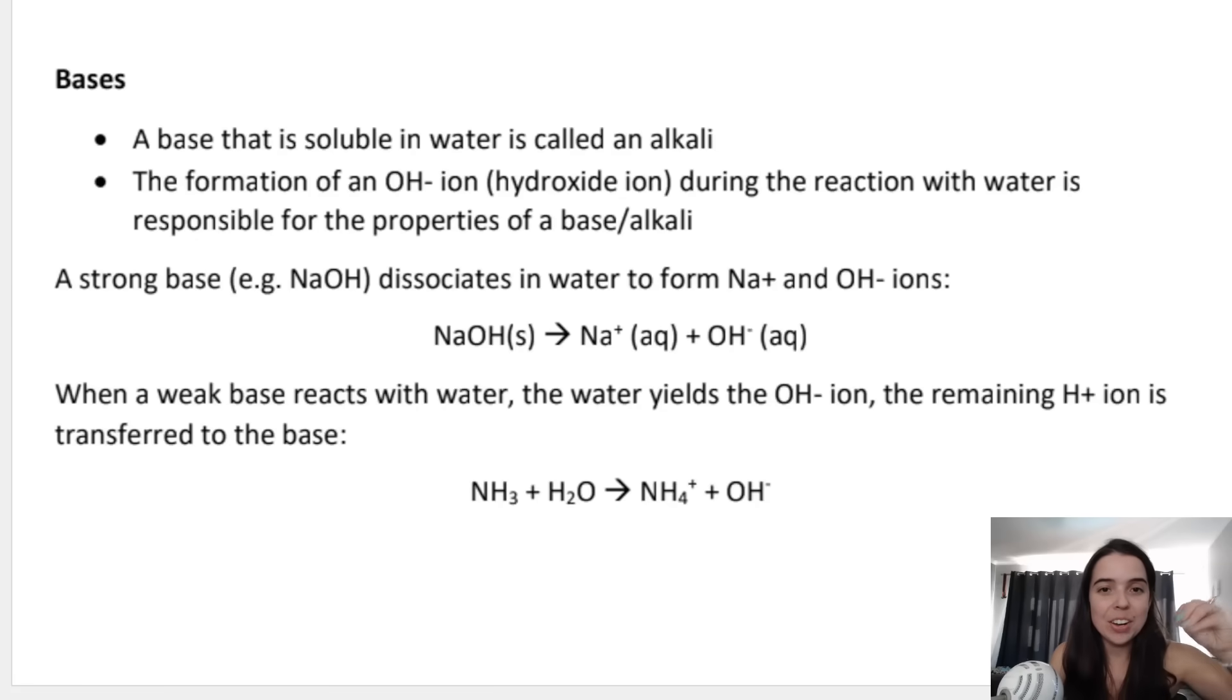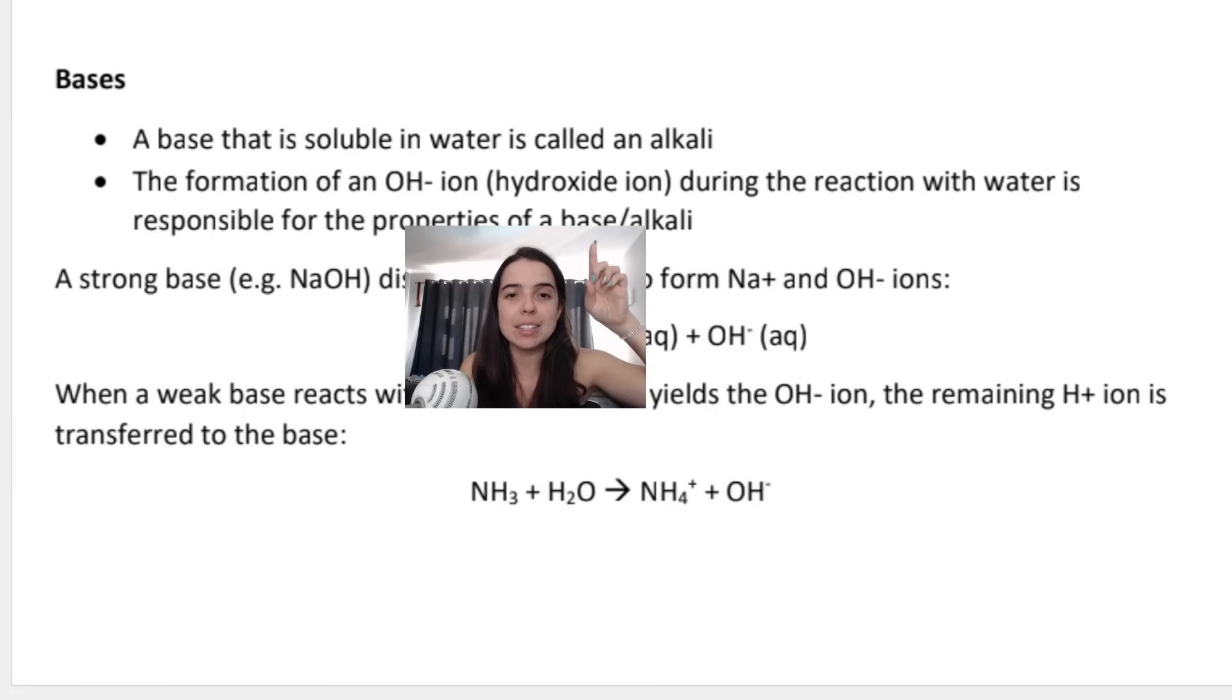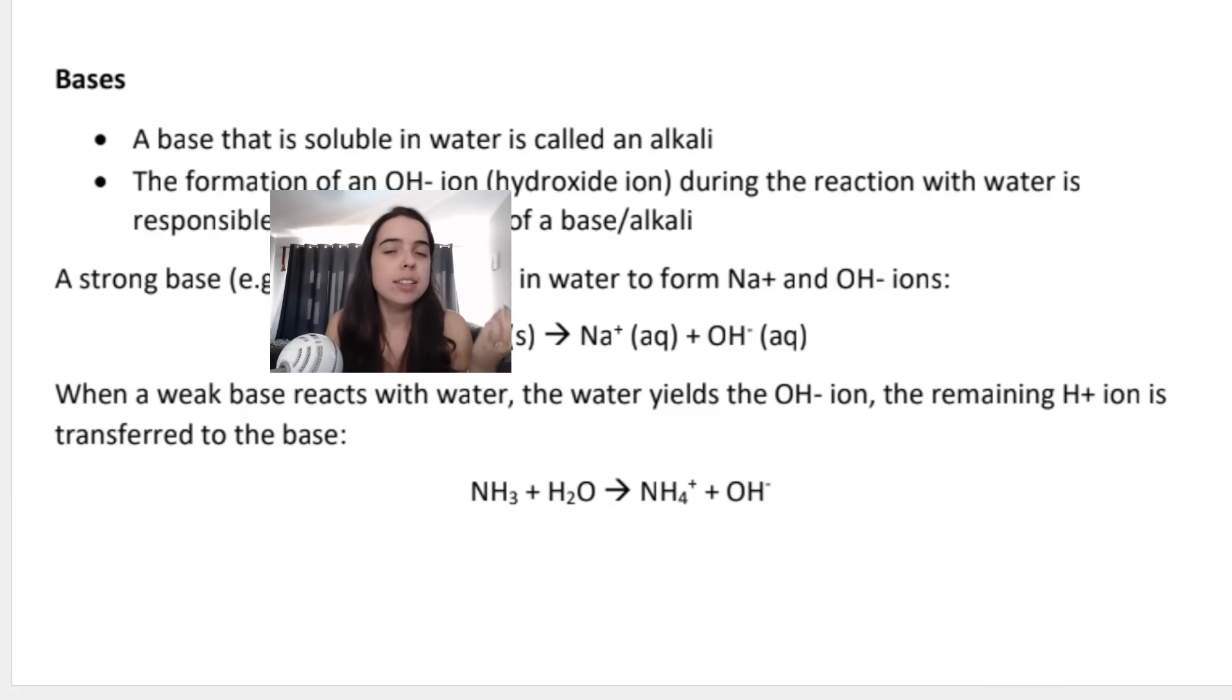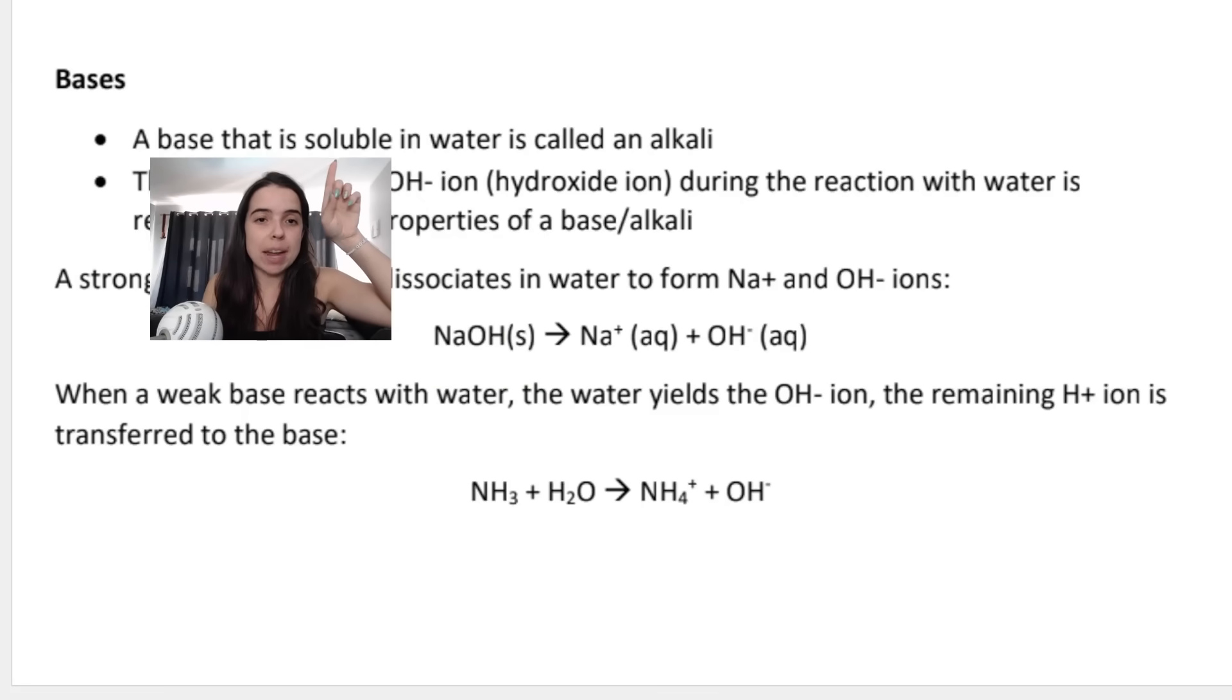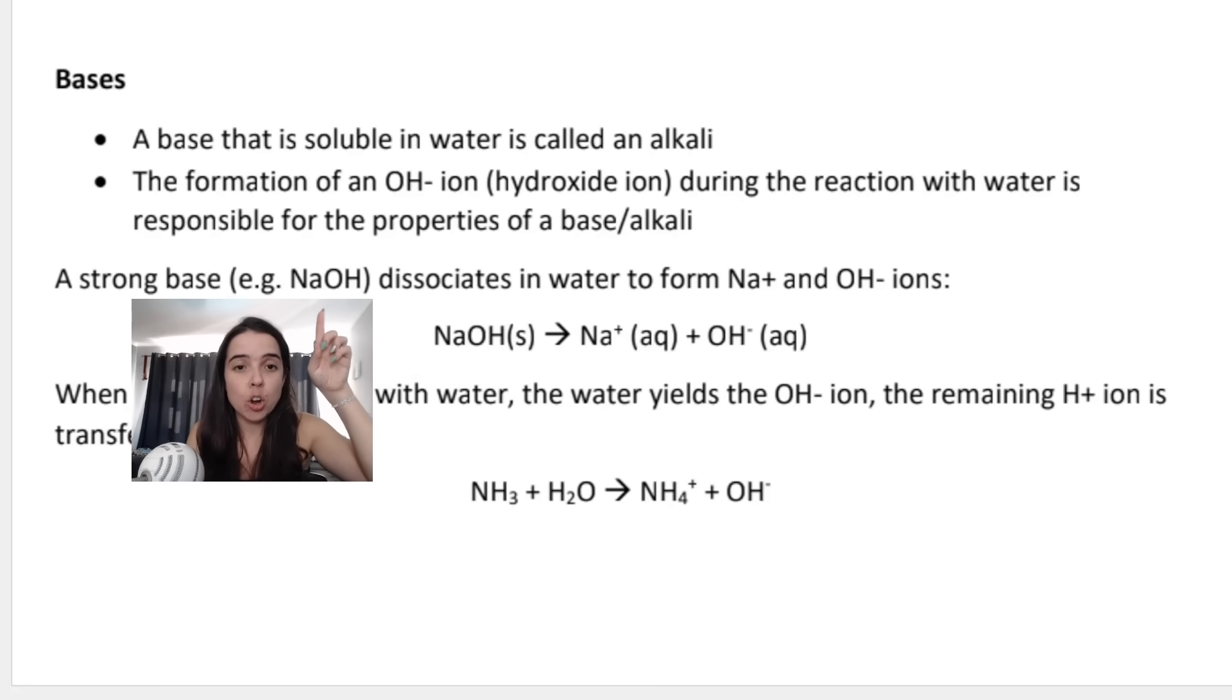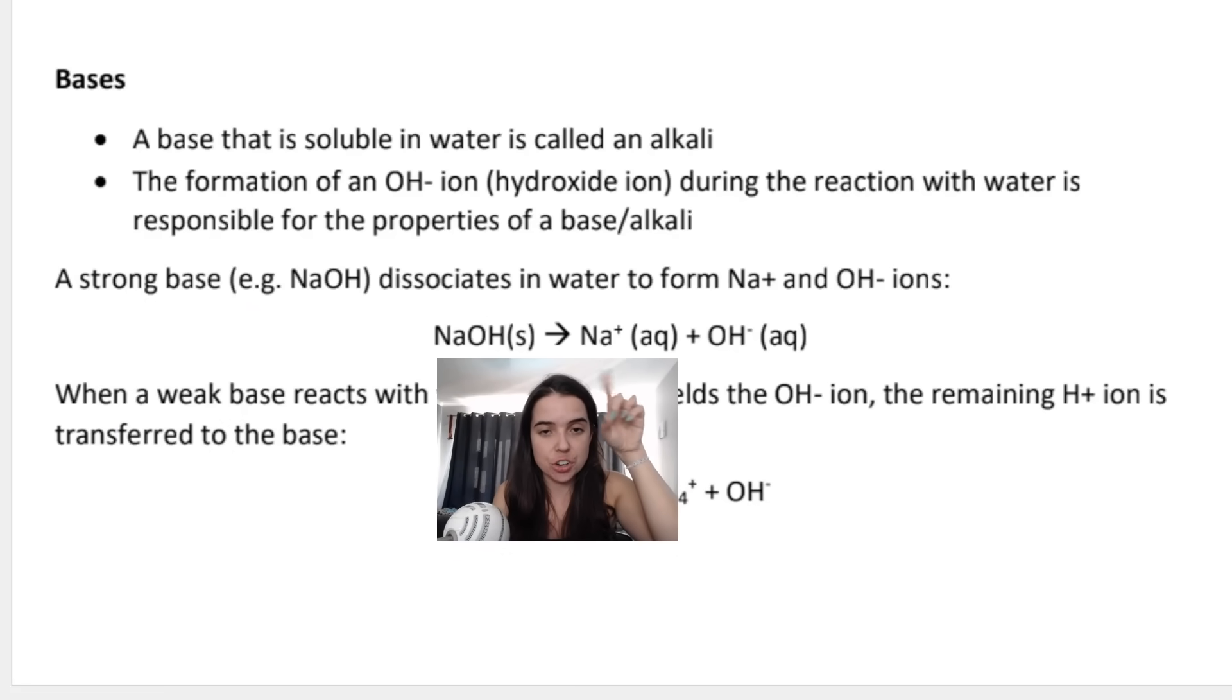When we think of hydroxide ions, we generally think of bases. What makes a base a base, what's responsible for the base-like or alkaline properties, is the formation of the hydroxide ion, the OH- ion. By the way, sometimes you hear bases called alkali substances. A base that is soluble in water is called an alkali.